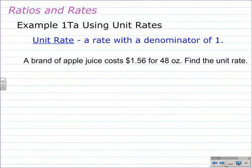Example 1TA, using unit rates. A unit rate is a rate with a denominator of one. A brand of apple juice costs $1.56 for 48 ounces. Find the unit rate.